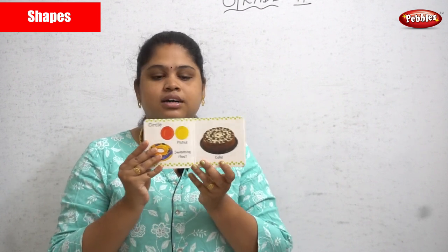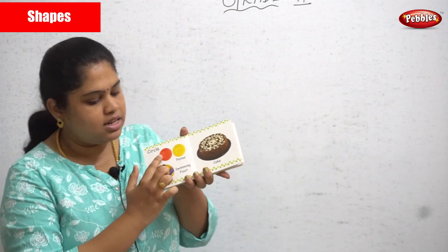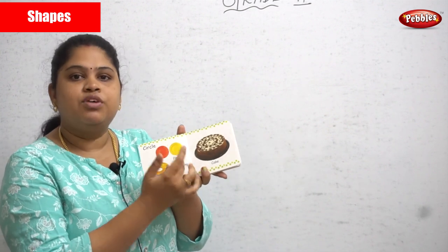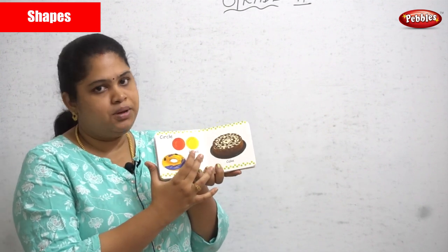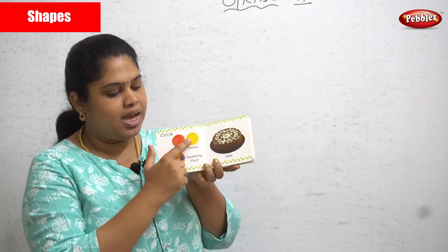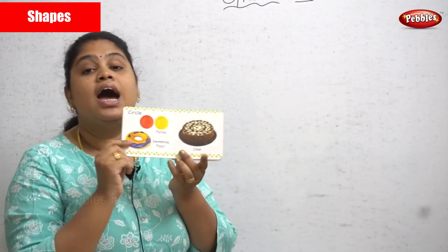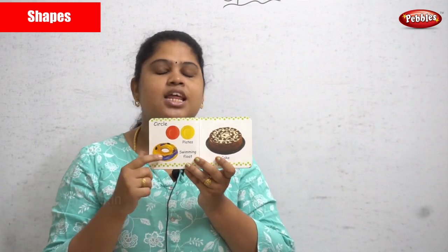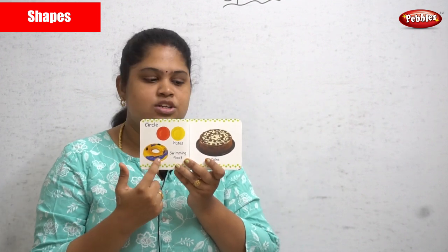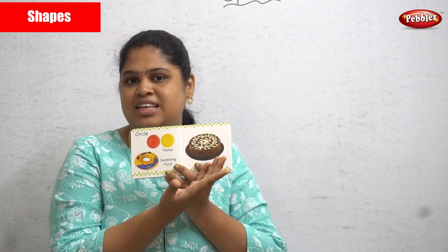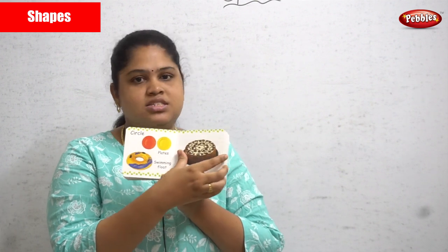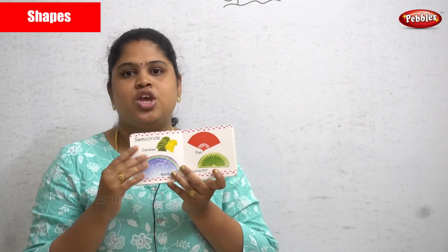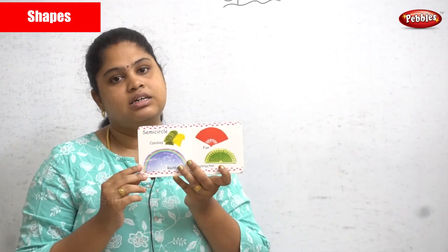Next is the circle. The plates we use to eat are round — plates are circular in shape. Donuts are also in a circular shape, and a black forest cake is also in a circle shape.